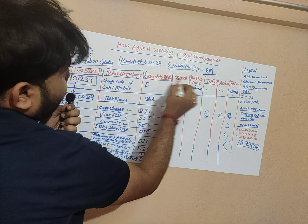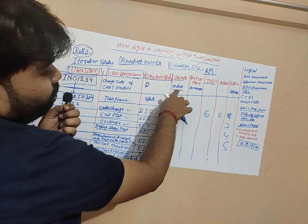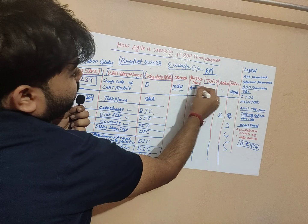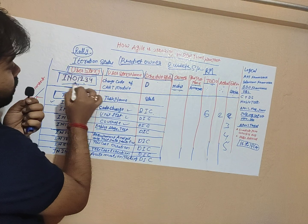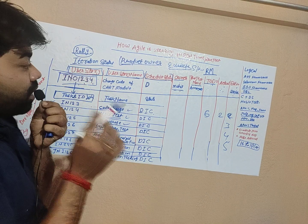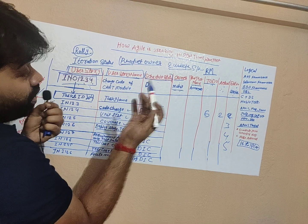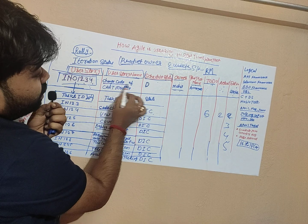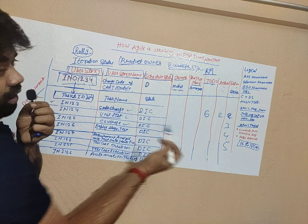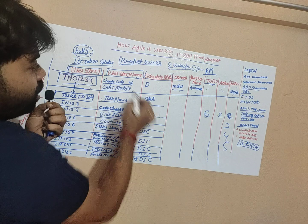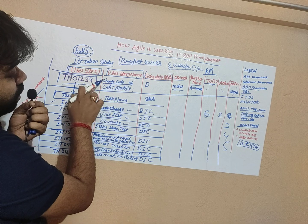We have a schedule state, the owner who is assigning the task, the project name, and the estimated and actual time — how much time a task will take. The user story ID is auto-generated. The user story name is the requirement — for example, 'change code for add cart,' like in an Amazon-type example.